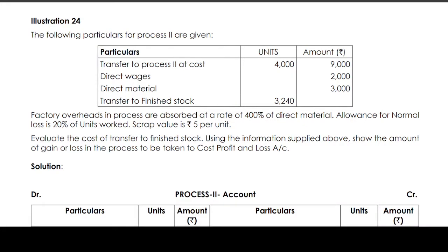In question 24, the following particulars for Process 2 are given. Transfer to Process 2 at cost: 4,000 units for the value of 9,000 rupees. Direct wages: 2,000 rupees. Direct material: 3,000 rupees. Transfer to finished stock: 3,240 units. Factory overhead is absorbed at a rate of 400% of direct material. Allowance for normal loss is 20% of units worked; scrap value is 5 rupees per unit. Evaluate the cost of transfer to finished stock and show the amount of gain or loss in the process to be taken to the cost profit and loss account.